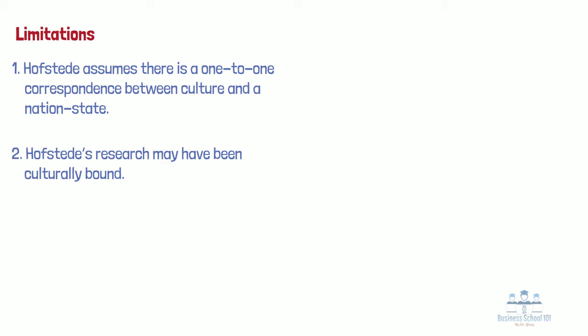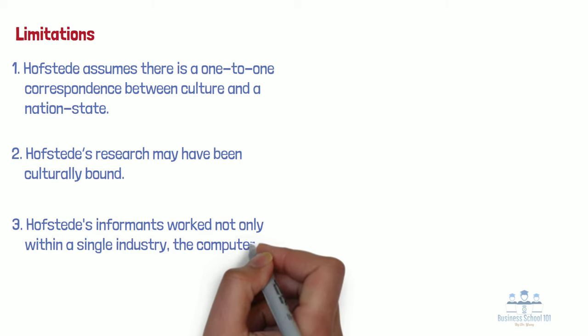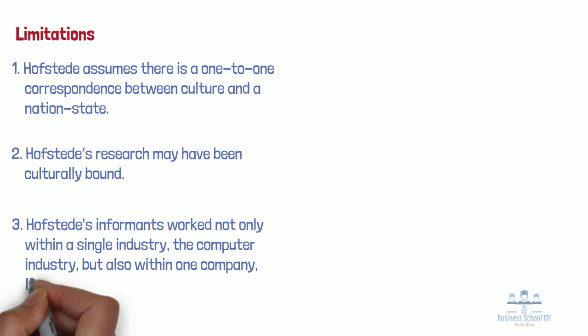So it is not surprising that Hofstede's results confirm Western stereotypes, because it was Westerners who undertook the research. Third, Hofstede's informants worked not only within a single industry — the computer industry — but also within one company, IBM. At the time, IBM was renowned for its strong corporate culture and employee selection procedures, making it possible for the employees' values to be different than the values of the cultures from which the employees came. Also, certain social classes, such as unskilled manual workers, were excluded from Hofstede's sample.